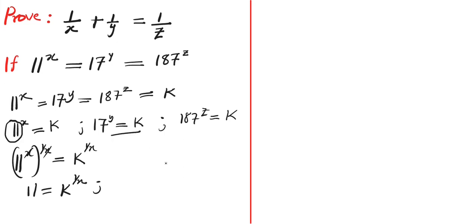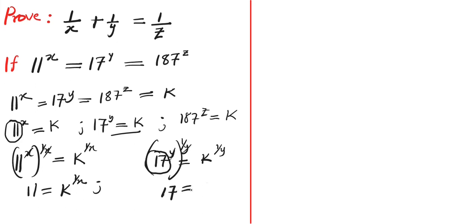We are going to do the same thing for 17. We have 17 power y equals to k, and we want to make 17 the subject. So we multiply both sides by 1 over y, and y will cancel y, giving us 17 equals to k power 1 over y.